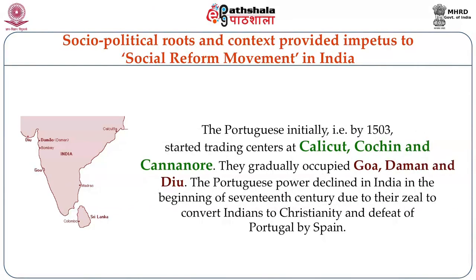The Portuguese, initially by 1503, started trading centers at Calicut, Cochin and Kannur. They gradually occupied Goa, Daman and Diu. The Portuguese power declined in India in the beginning of the 17th century due to their zeal to convert Indians to Christianity and the defeat of Portugal by Spain.